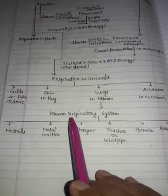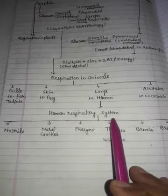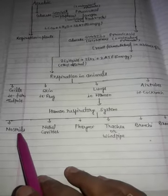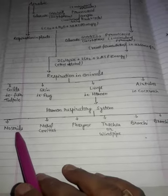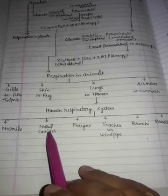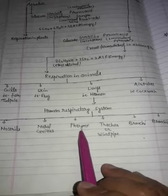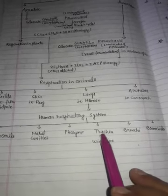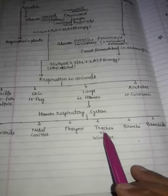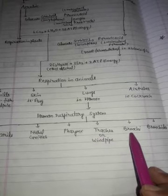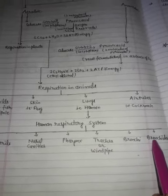Human respiratory system is divided into many parts: first nostril, second nasal cavities, third pharynx, fourth trachea. Trachea's another name is windpipe, then bronchi and bronchioles.